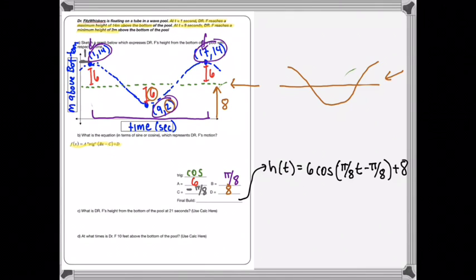So it says, what is Dr. Fitzwhiskers height from the bottom of the pool at 21 seconds? So this is how we're going to knock that out. Since we know the equation already, basically we're just going to put it into our calculator here, and we want to make sure that we're in radians, because if we're in degrees, it's going to be off.